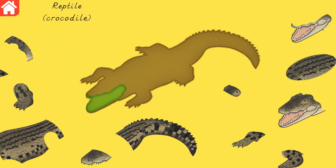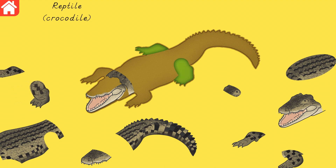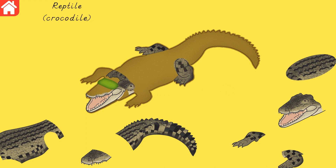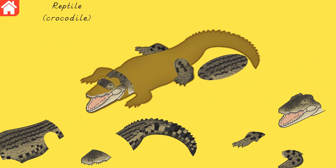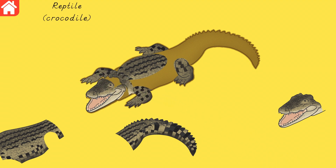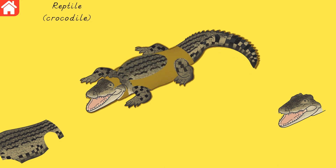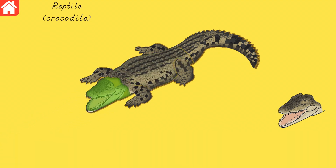Find the animal puzzle piece that matches the blinking image. Jaws, neck, hind legs, eyes, bony scales, snout, fore legs, tail, body, head.